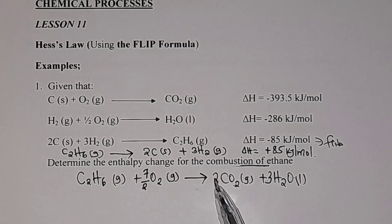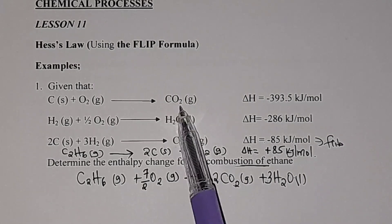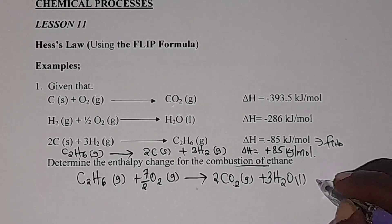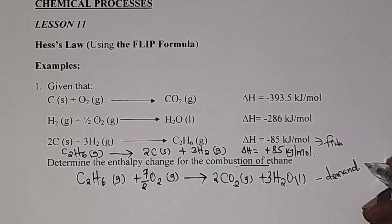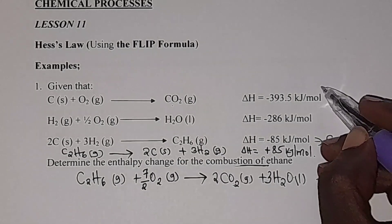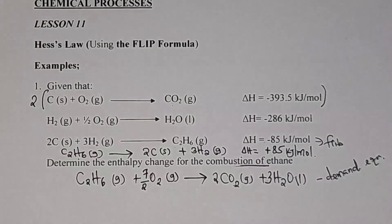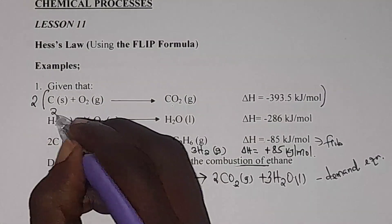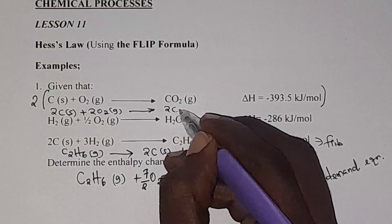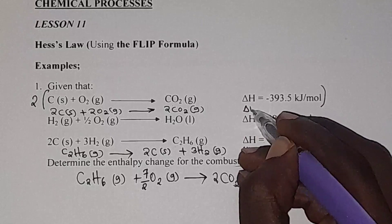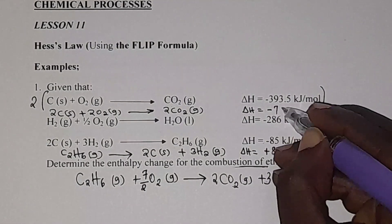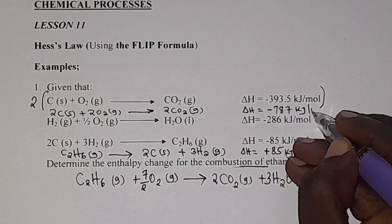Here we have carbon dioxide — 2 moles are needed on the product side of the target equation. This is called the demand equation. In the given equation I only have 1 mole of carbon dioxide, so I must take the whole equation and multiply by 2. That gives us: 2C solid + 2O₂ gas → 2CO₂ gas. We also multiply the enthalpy change by 2, giving negative 787 kJ per mole.